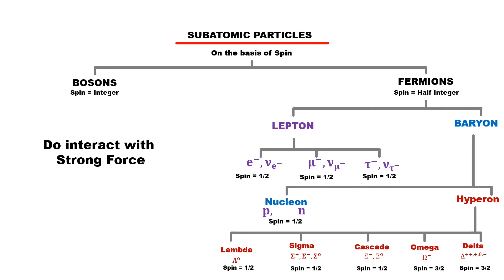One thing to note is that these are all baryon particles. Sigma-minus is not the antiparticle of sigma-plus; rather, these are all particles, and their antiparticles are represented by placing a bar over them.